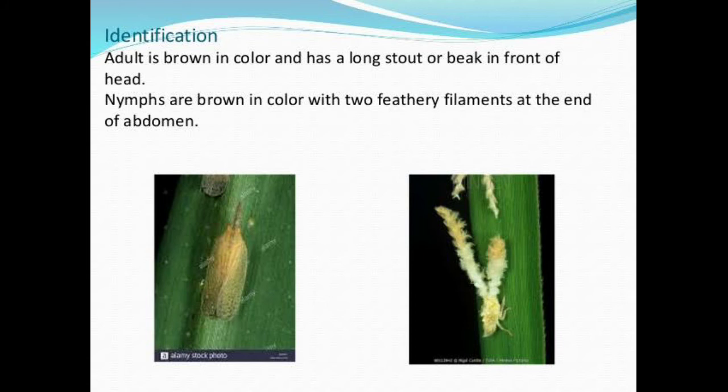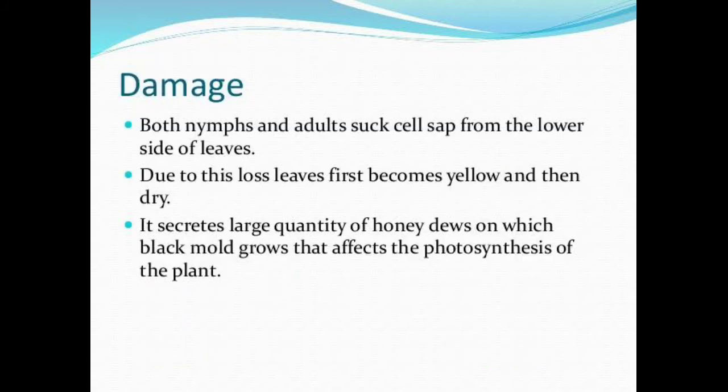If we talk about the identification, the adult is brown in color and the damage is caused by both the nymph and adult. They suck the cell sap from the lower side of the leaves. Due to this loss, leaves first become yellow and then become dry. It secretes large quantities of honeydew which affects the photosynthesis of the plant.